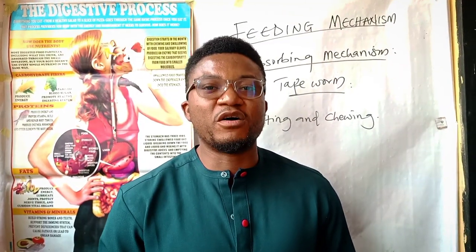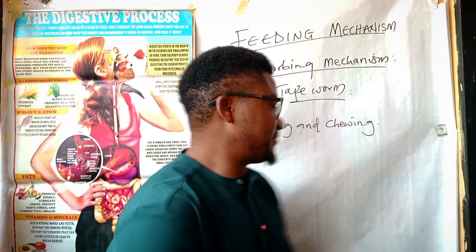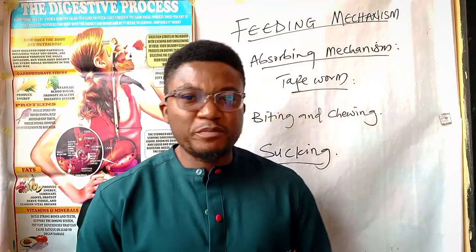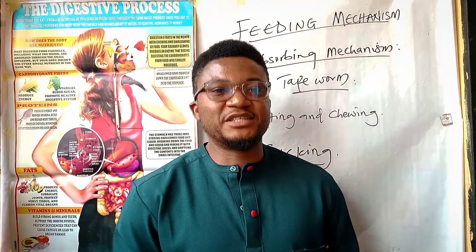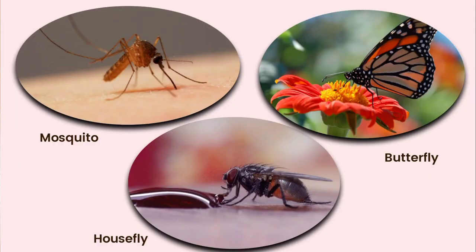The third mechanism of feeding is the sucking mechanism. There are three popular organisms which exhibit the sucking mechanism: the mosquito, the butterfly, and the housefly. These organisms have different modifications in their mouths that help them in feeding.